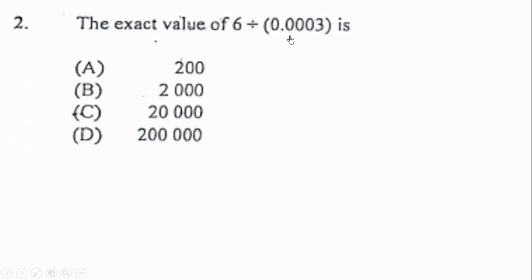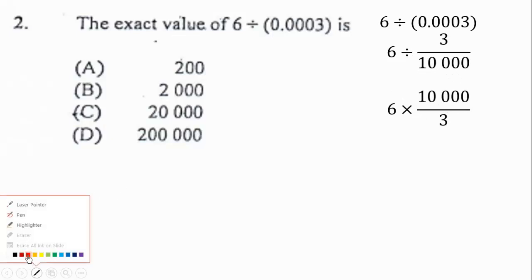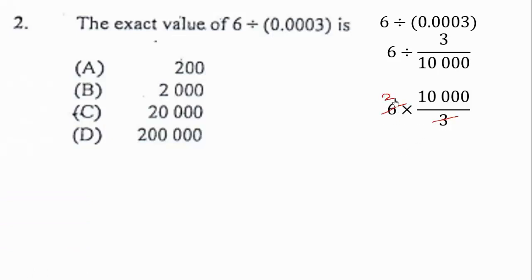The next question: the exact value of 6 divided by 0.0003. We simplify by changing 0.0003 to a fraction: 3 over 10,000. We then change this to multiplication and reciprocate, simplify, and multiply 2 by 10,000 to get 20,000. So 20,000 is the correct answer.